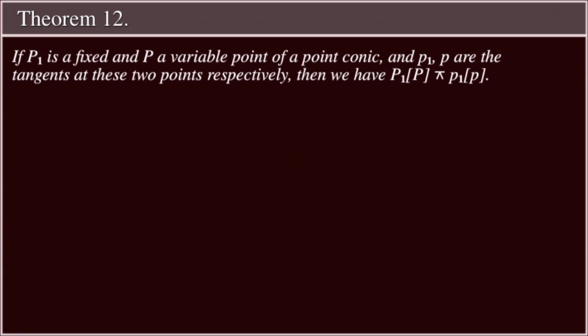Theorem 12: If P₁ is a fixed and P a variable point of a point conic, and p₁, p are the tangents at these two points respectively, then we have P₁ pencil P projective with p₁ pencil p.